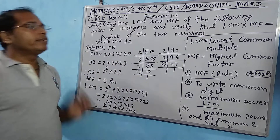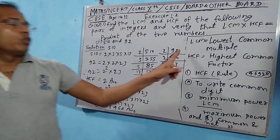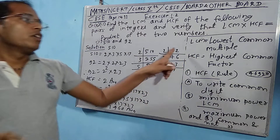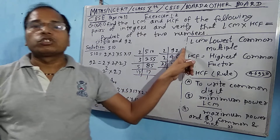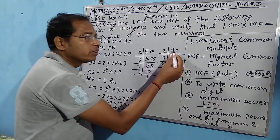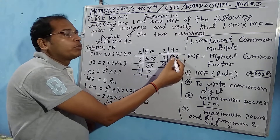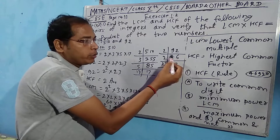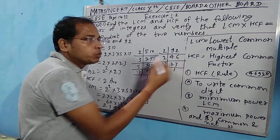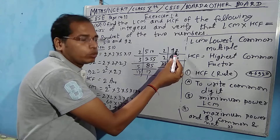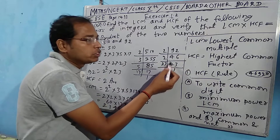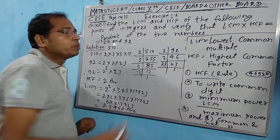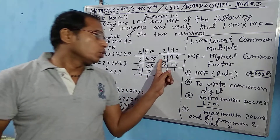Now let's look at 92. The unit place of 92 has 2, so it is divisible by 2. When the unit digit is 2, 4, 6, or 8, the number is divisible by 2. Dividing: 2 × 46 = 92, then 2 × 23 = 46. So we get 23 remaining after dividing by 2 twice.